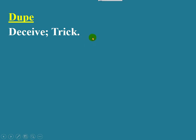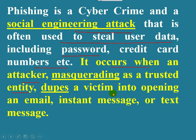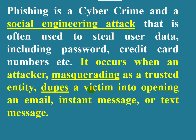The attacker deceives the victim by playing some trick, duping the victim into opening an email, instant message, or text message. Please remember, phishing takes place mainly through email. So the attacker pretends to be a trusted entity, thereby deceiving the victim and tempting him to perform an action.